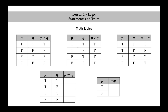For the biconditional: true if and only if true is true, true if and only if false is false, false if and only if true is false, and false if and only if false is true. And finally for the negation: not true is false, and not false is true.